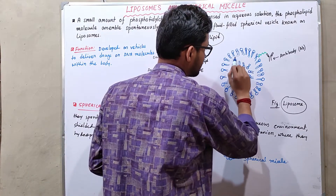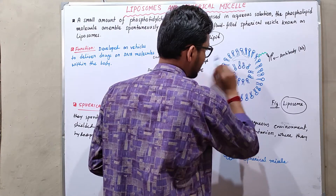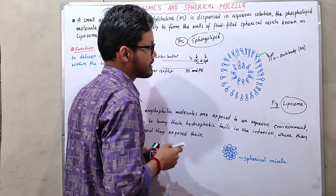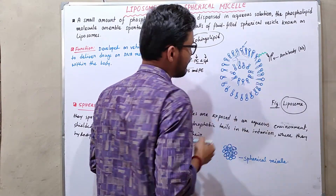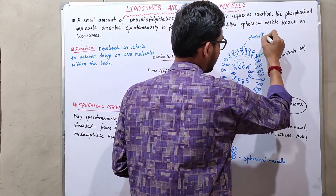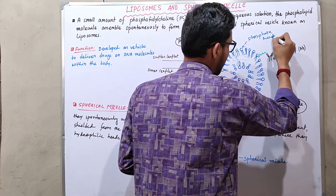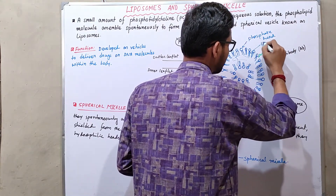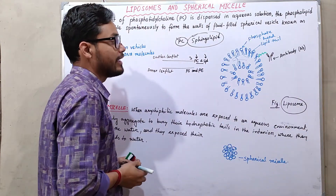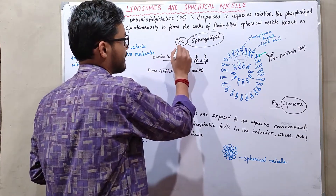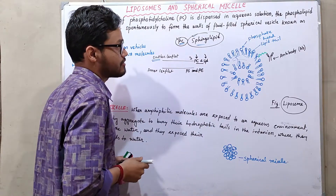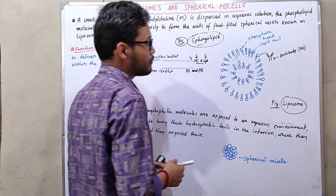In the liposome structure, the middle portion is the lipid bilayer, which contains the fatty acid tails of the phospholipids. The outer portion is the hydrophilic aqueous portion containing the phosphate head groups. Both the phosphate head and lipid tail, along with phosphatidylcholine and sphingolipids, combine to make the structure known as a liposome.